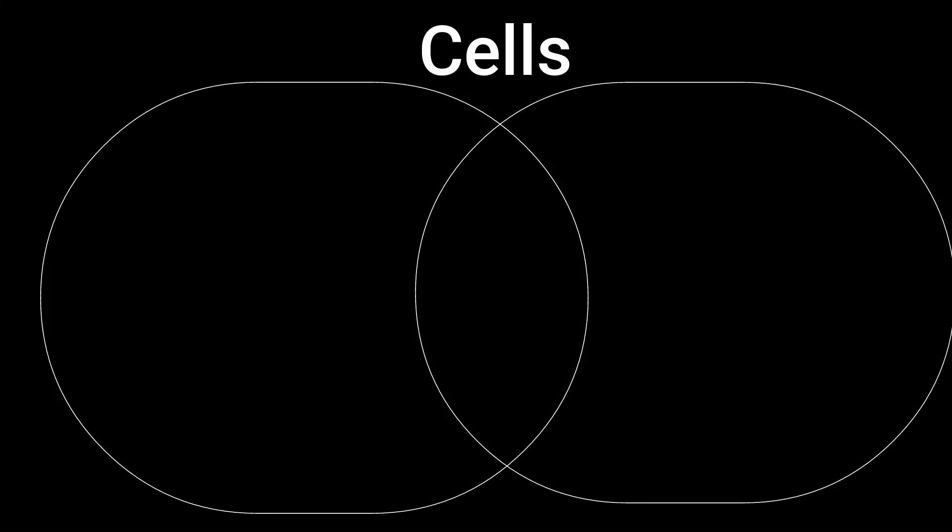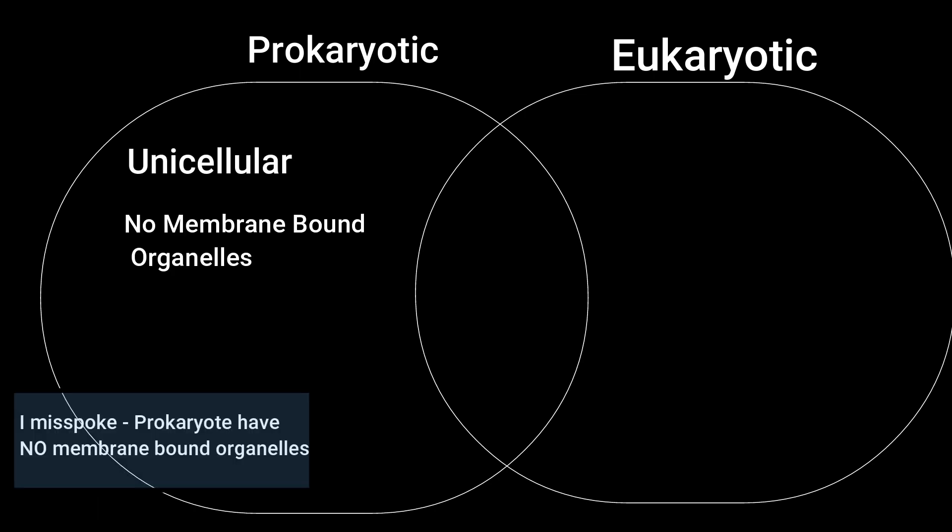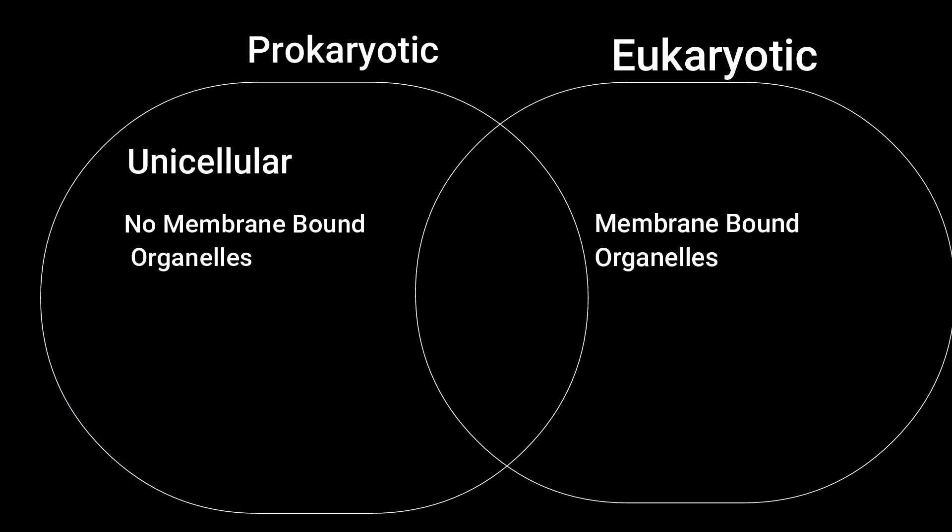So to recap, there are two types of cells, prokaryotic and eukaryotic. Prokaryotic cells are unicellular and have no membrane-bound organelles. Eukaryotic cells have membrane-bound organelles and can be multicellular and unicellular. Both types of cells have cytosol, chromosomes, and ribosomes.